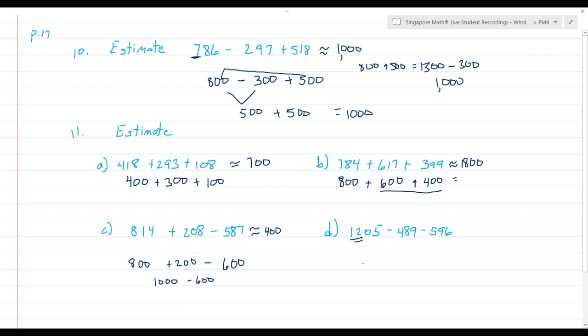Letter D. I have 1205, which rounds to 1200. 489, which rounds to 500. 596, which rounds to 600. And notice I'm subtracting 500 and subtracting 600. If I take 1200 minus 500, I find that to be 700. And 700 minus 600 gives me an estimate of 100. But just for fun, I'd like you to notice this. I'm going to subtract 500 and then I'm going to subtract 600. Altogether, I'm going to subtract 1100. And 1200 subtract 1100 is in fact the same answer. Because I can combine the ones I'm going to subtract and subtract them all at once.